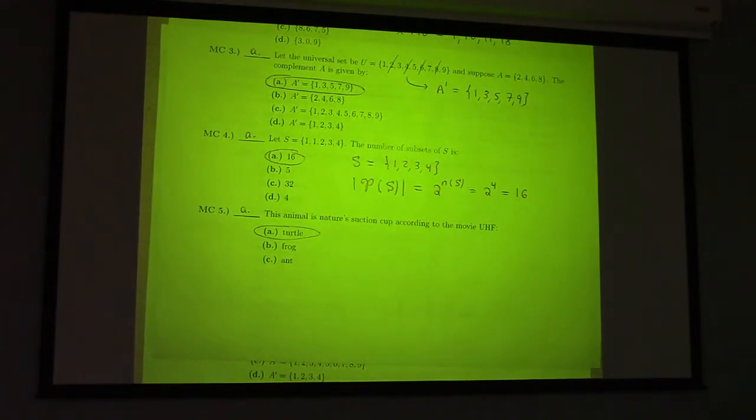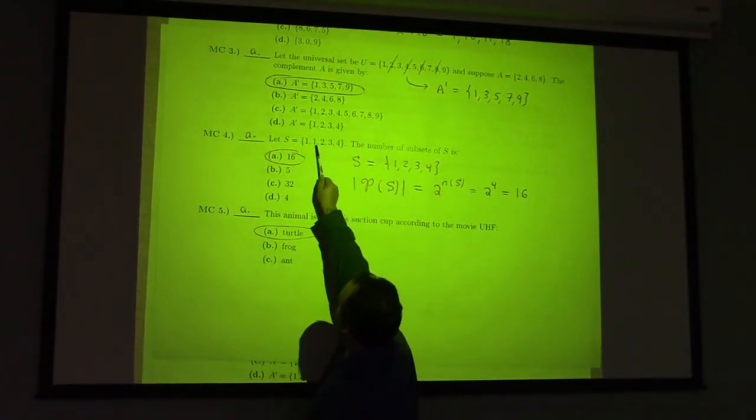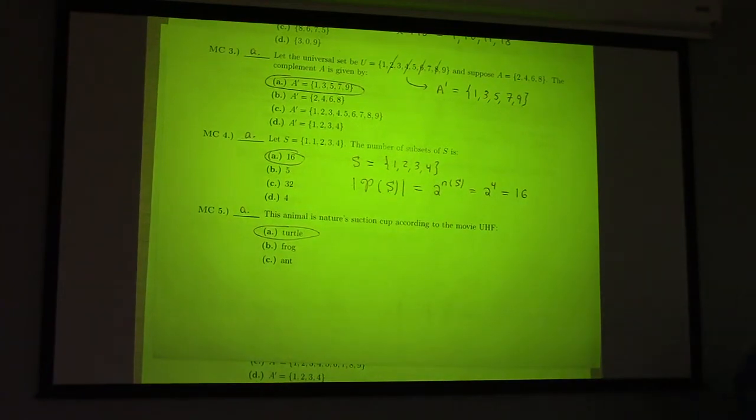So, for number 4, number 4 is, as they say, a trap, right? Number 4 is kind of a trick question. The trick here is, of course, that these are the same point. So really, S is just 1, 2, 3, 4, which means, well, it looks like you have 5 things. In fact, you only have 4 things.